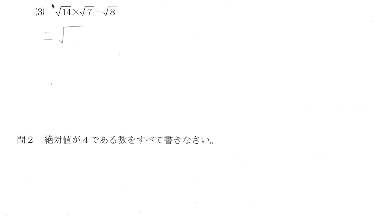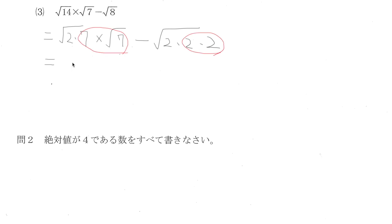The order of operations is the same when you're dealing with square roots. So 14 is 2 times 7, and root 7 minus 8 is 2 cubed. When you get a pair of numbers inside a square root, you can take one of them out. So 7 root 2 minus 2 root 2 — we subtract 2 from 7 — giving 5 root 2.